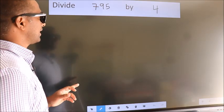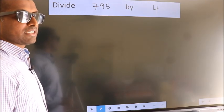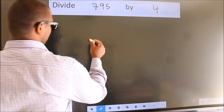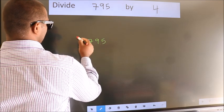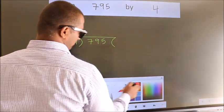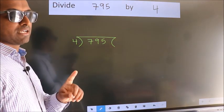Divide 795 by 4. To do this division, we should frame it in this way. 795 here, 4 here. This is your step 1.